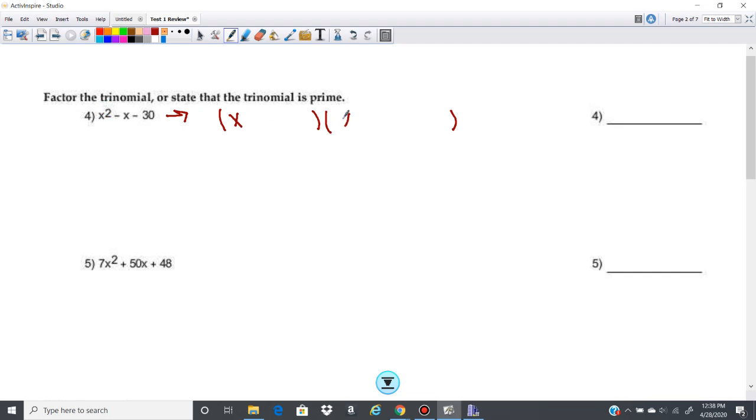I'm going to put my x and my x here, and then I'm going to look for two terms to go here and here. And I want those two terms to multiply to a negative 30, but also add to my middle term, which is a negative 1.